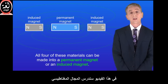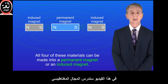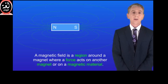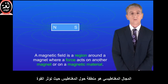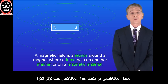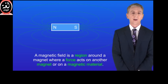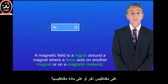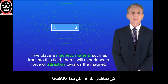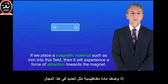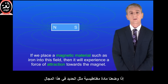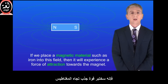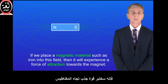In this video we're looking at magnetic fields. A magnetic field is a region around a magnet where a force acts on another magnet or on a magnetic material. If we place a magnetic material, such as iron, into this field, then it will experience a force of attraction towards the magnet.